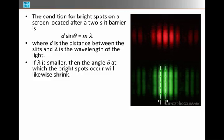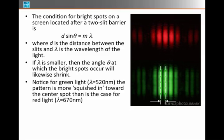So if we shine green light through a two slit experiment, the two adjacent bright spots are closer together than if we shine red light, which has a larger wavelength, through the same two slit experiment.